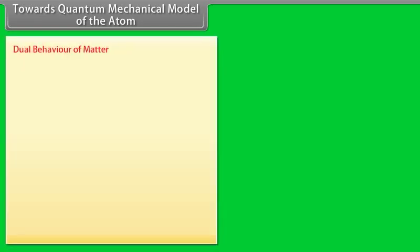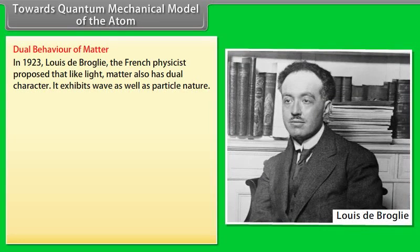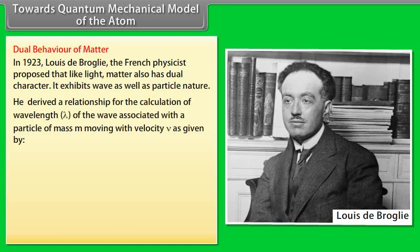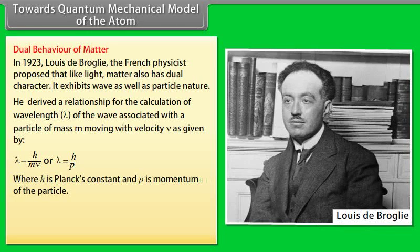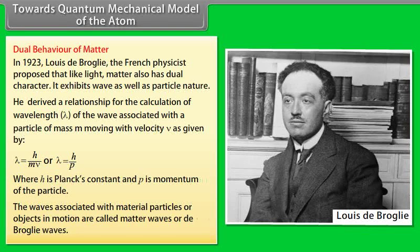Towards the quantum mechanical model of the atom — Dual behavior of matter. In 1923, Louis de Broglie, the French physicist, proposed that like light, matter also has dual character. It exhibits wave as well as particle nature. He derived a relationship for the calculation of wavelength lambda of the wave associated with a particle of mass M moving with velocity V, given by lambda = h/mv or lambda = h/p, where h is Planck's constant and p is momentum of the particle.